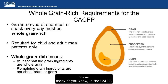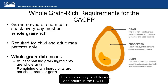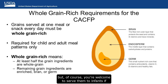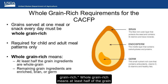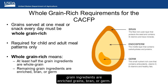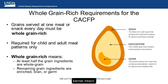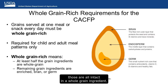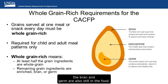In the CACFP, grains served at least one snack or meal must be whole grain rich. This applies only to children and adults in the CACFP — infants are not required to be offered whole grain rich foods, but you're welcome to serve them if you'd like. Whole grain rich means at least half of the grain ingredients are whole grain ingredients, and the remaining grain ingredients are enriched grains, bran, or germ. Whole grain ingredients have all parts of the grain kernel intact — the bran, the endosperm, and the germ — meaning the nutrients naturally in the bran and germ are still present in the food.